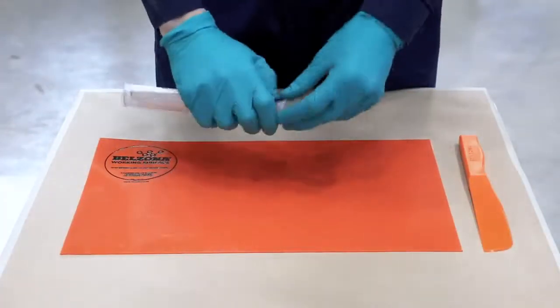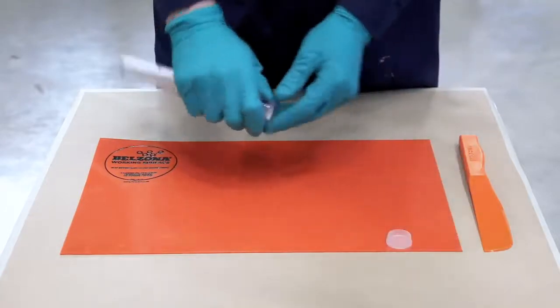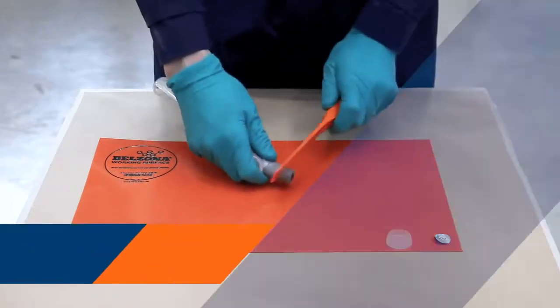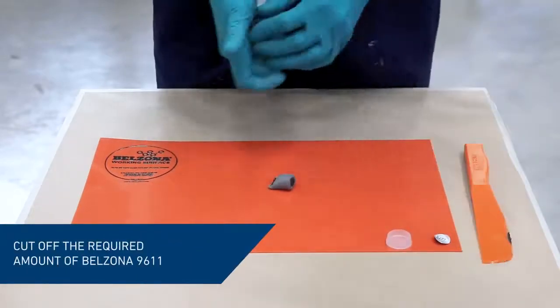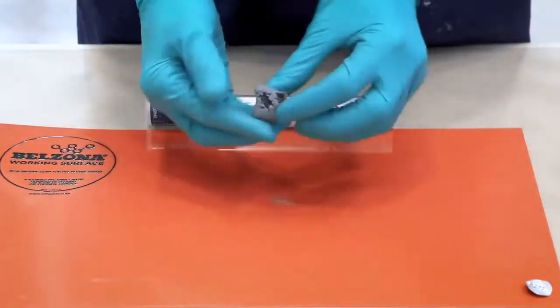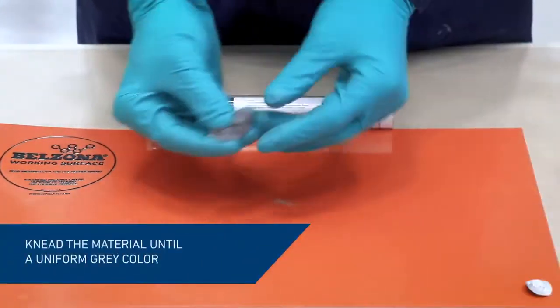To stop the leak, we use Belzona 9611, a rapid curing putty designed for sealing low-pressure live leaks. Measure and cut off the required amount of Belzona 9611, and knead it in gloved hands until a uniform gray color is achieved.